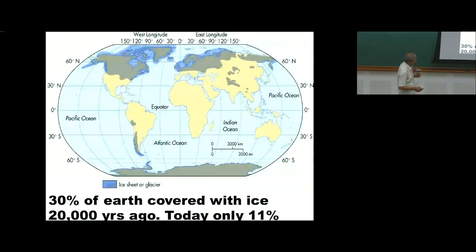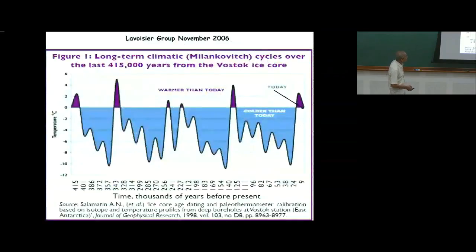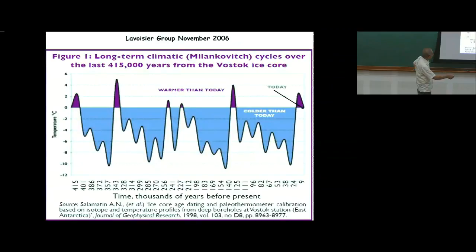During the last ice age, 30% of the Earth was covered in ice; today it's only 11%. In the last 400,000 years of ice core data, there were four major ice ages with temperatures about 10 degrees below the present, and a few warm periods. But most of the time, the Earth was in an ice age.